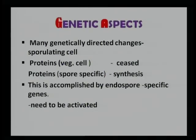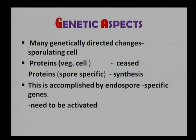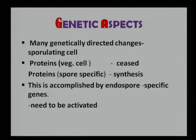Once they sense the environmental trigger, they undergo many genetically directed changes. For sporulation to occur, it is very much necessary that proteins involved in the endospore-vegetative cell function be ceased and spore-specific proteins be synthesized. This is accomplished by endospore-specific genes. More than 200 such genes are utilized for the production of a spore, but they need to be activated.